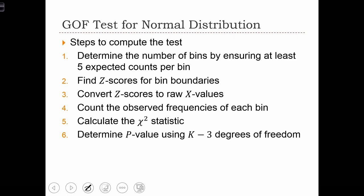I want to just summarize the steps taken in order to compute the goodness-of-fit test for a normal distribution. The first thing that we need to do is determine the number of bins. And we do this by ensuring that at least five expected counts exist per bin. In other words, what we are going to do is take the total number of observations in our sample and divide that by five to get k, the number of bins.